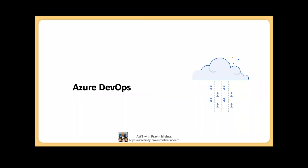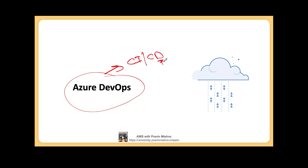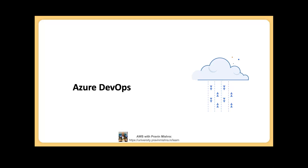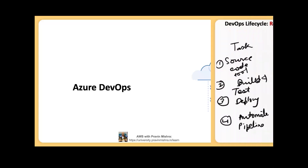Welcome back. In this session we are going to understand Azure DevOps platform. Azure DevOps is a platform that we can use for continuous integration, continuous delivery, and continuous deployment. As I mentioned in previous sessions, for CI/CD we need to use some tool, and we are going to use Azure DevOps.